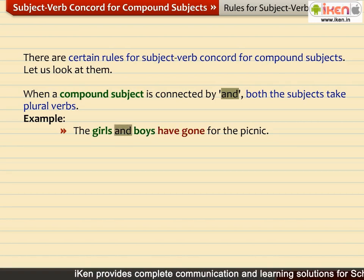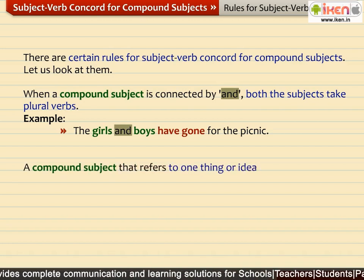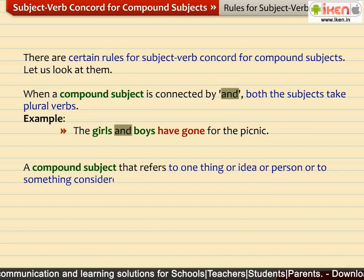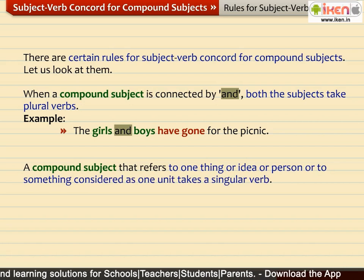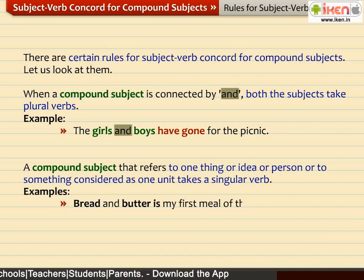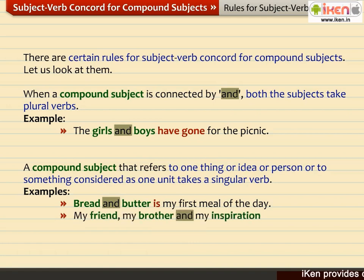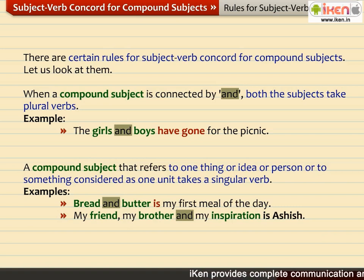A compound subject that refers to one thing, or idea, or person, or to something considered as one unit, takes a singular verb. For example: 'Bread and butter is my first meal of the day.' Bread and butter refer to one meal and take the singular verb IS. Similarly, 'My friend, my brother, and my inspiration is Ashish.' The compound subject refers to one person, Ashish, so it takes the singular verb IS.